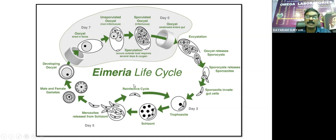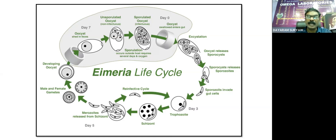During the pathogenesis of Eimeria, whenever there is a release of sporozoites in the gut, that leads to severe inflammatory reaction in the intestinal tract. The pathogenesis of Eimeria is based on the number of oocysts consumed by the host. If a large number of oocysts is consumed, there are chances of the acute type of coccidiosis. If fewer Eimeria oocysts are consumed by the host — sheep or goat — then there are chances of the chronic type of coccidiosis.